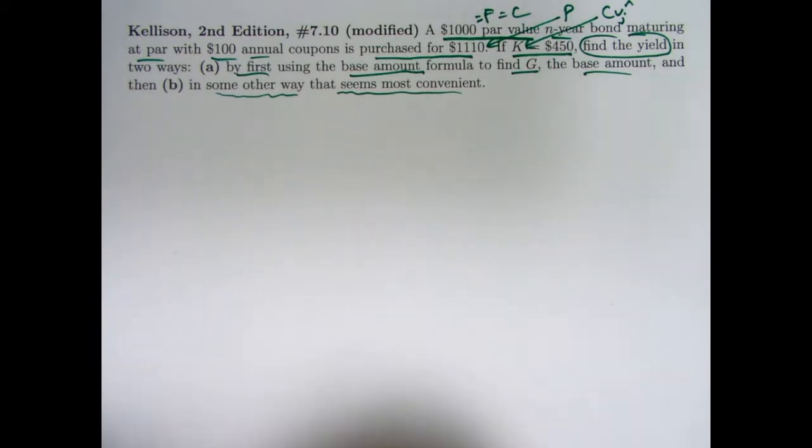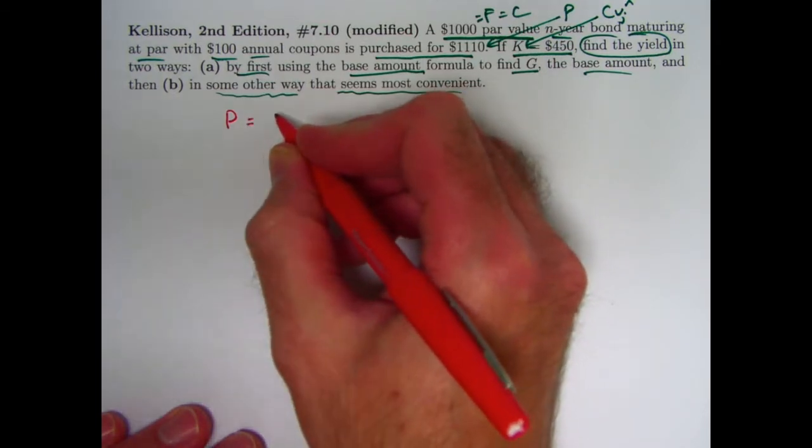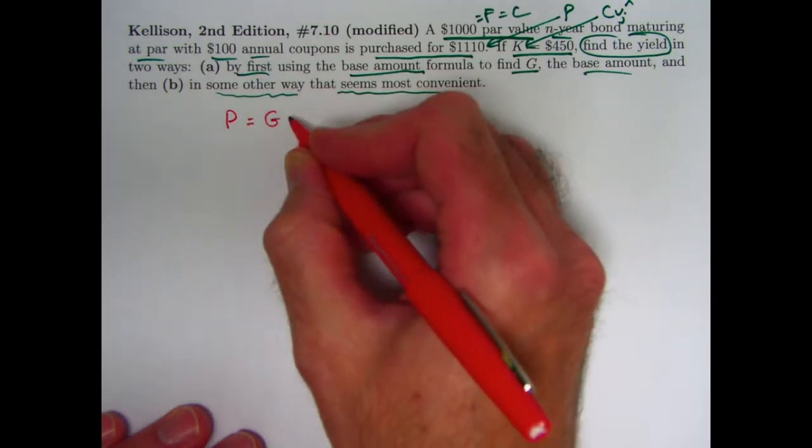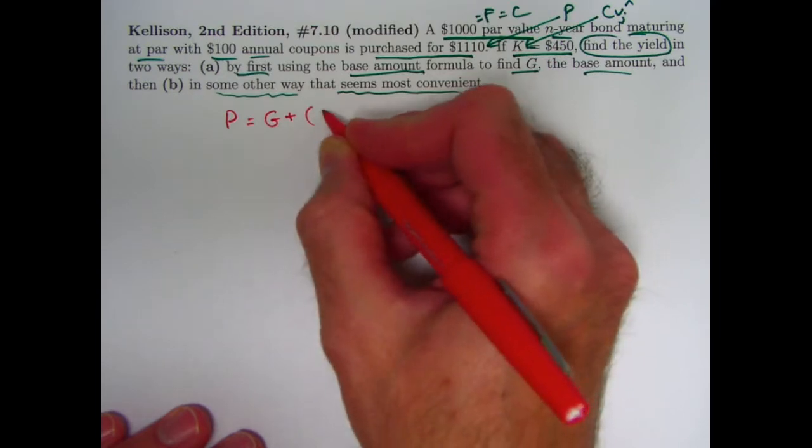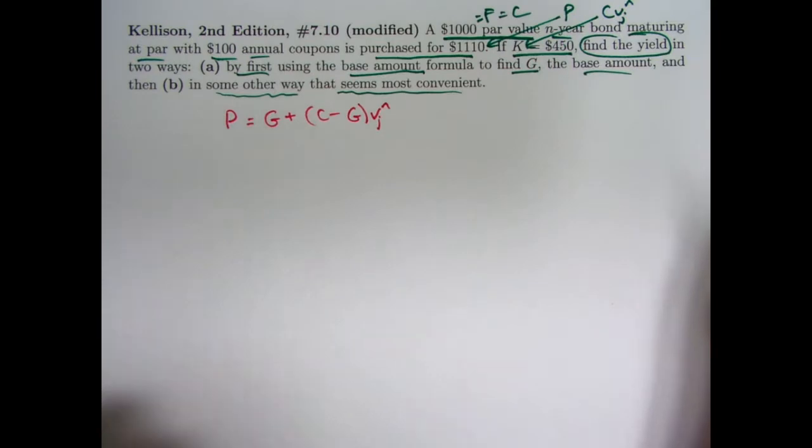What was the base amount formula? It said that the price, P, is capital G, which is the base amount, plus the difference C minus capital G times V to the N, or V sub J to the N if you prefer.